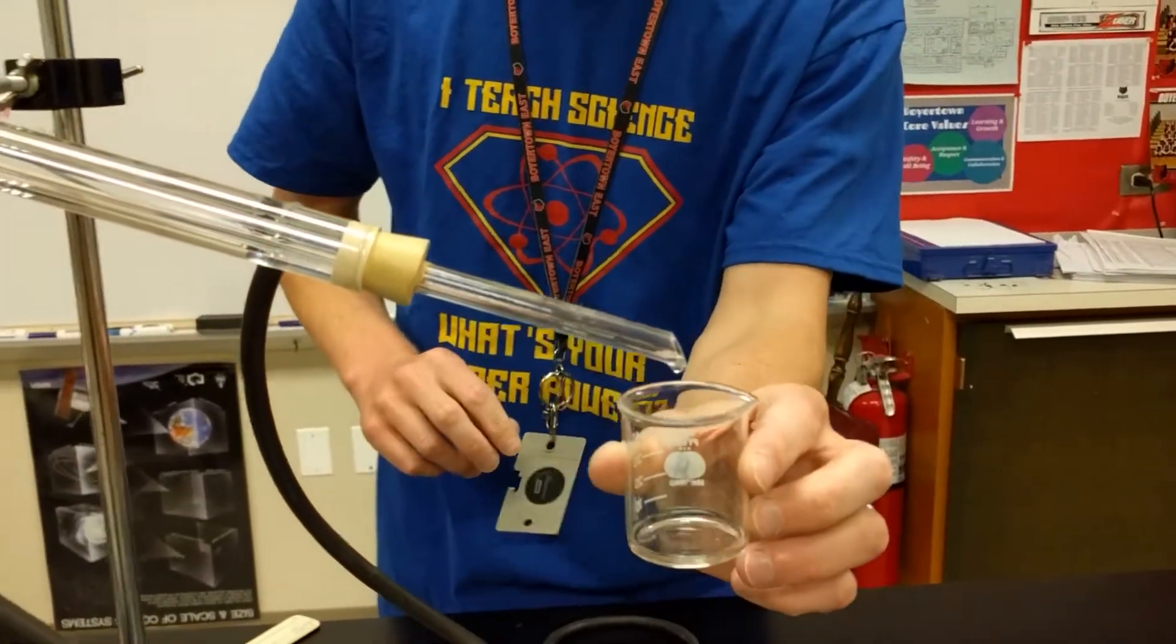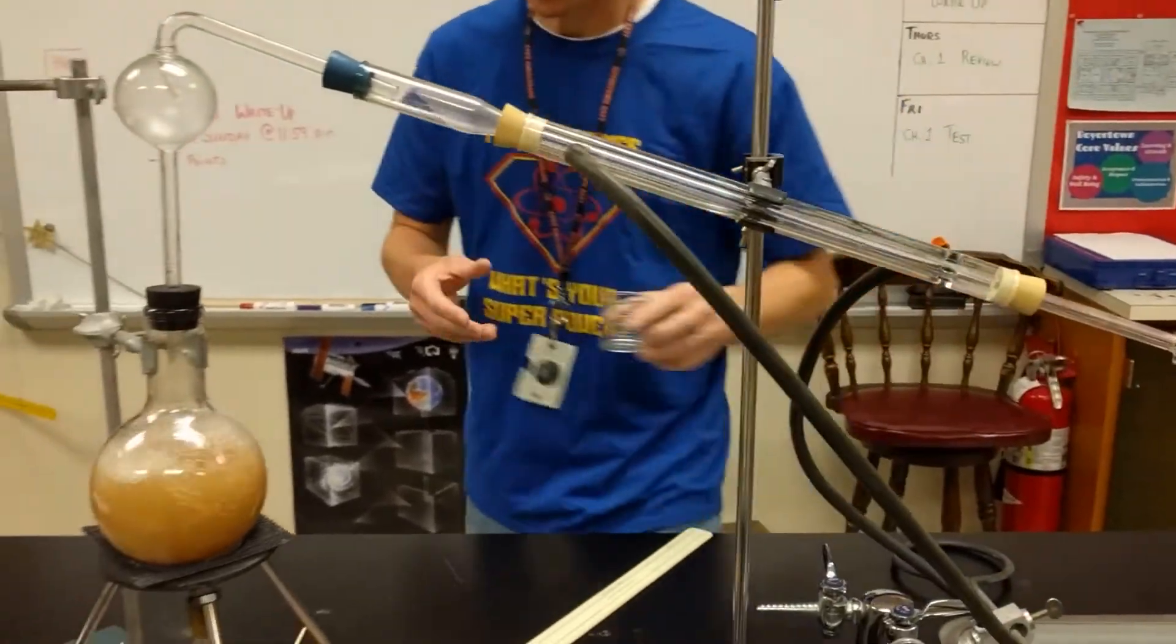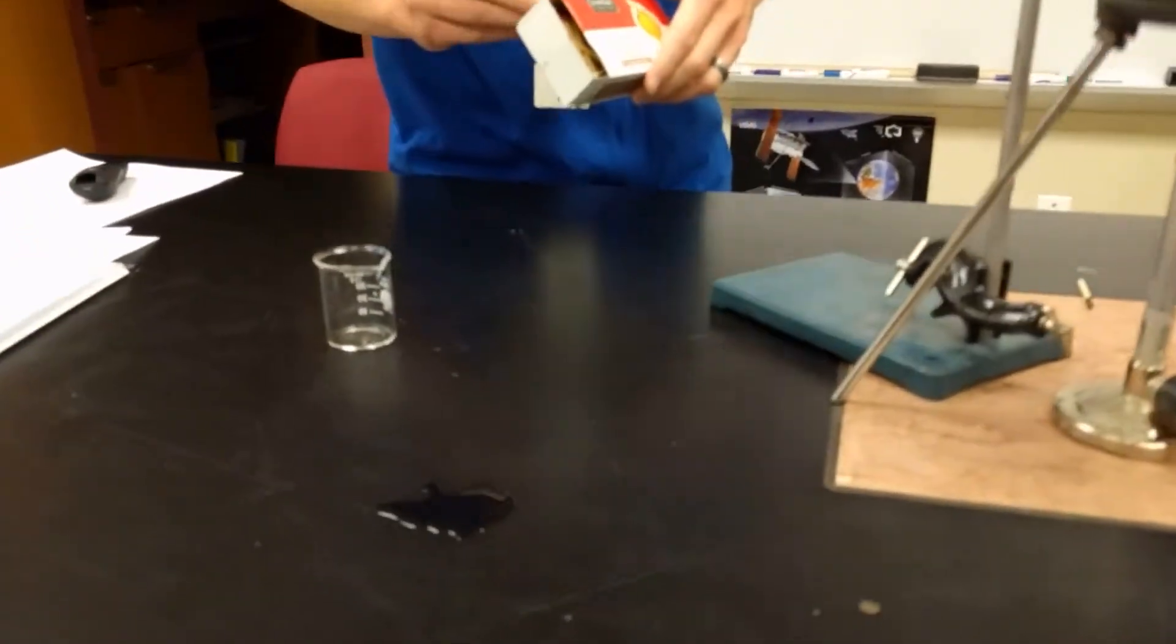Now, if this is pure ethanol and pure alcohol, we know that a chemical property is that it should be flammable. So let's try it here and see if we did catch pure ethanol.